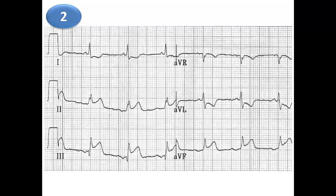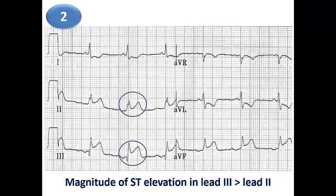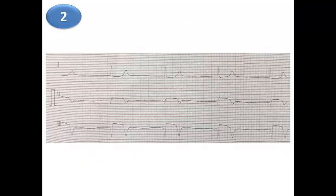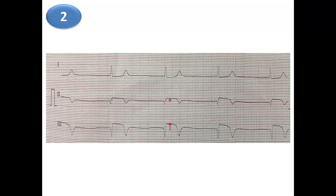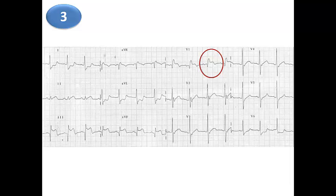The second sign of RV infarction is ST elevation magnitude greater in lead III than in lead II. This is because the axis of RV infarction is directed more toward the positive pole of lead III than lead II. Here we can see that the magnitude of ST elevation is higher in lead III than lead II, which is considered a sign suggestive of RV infarction.